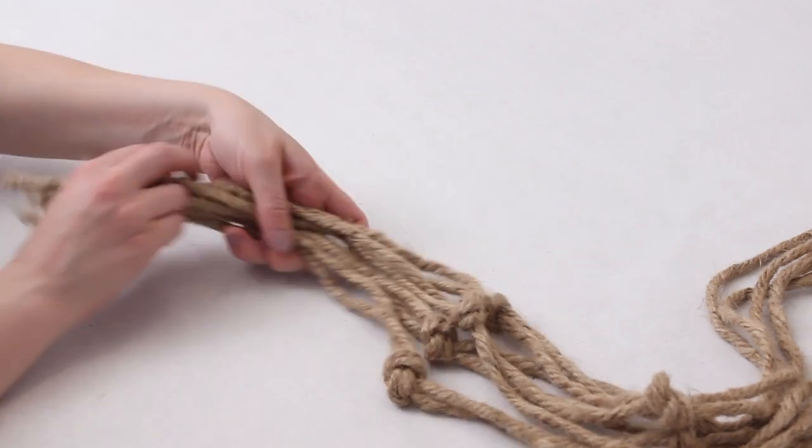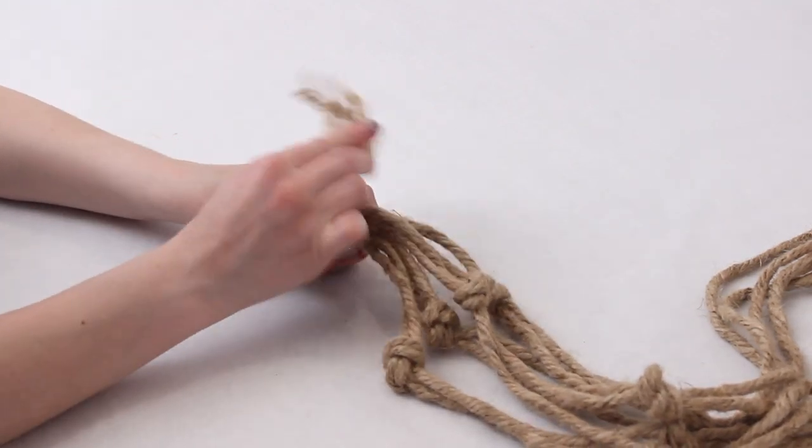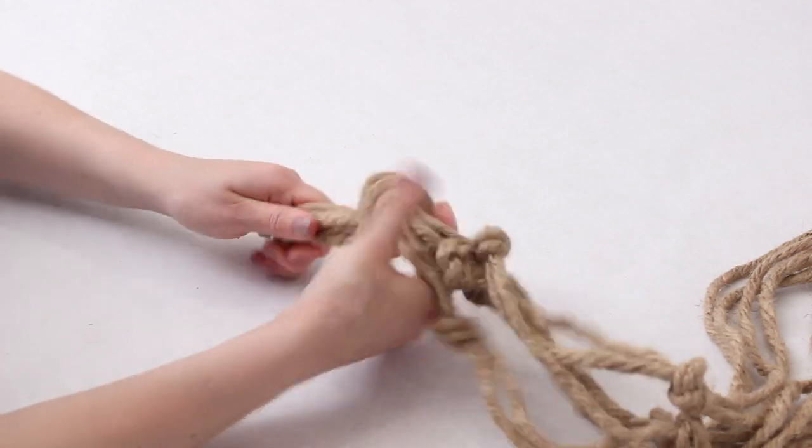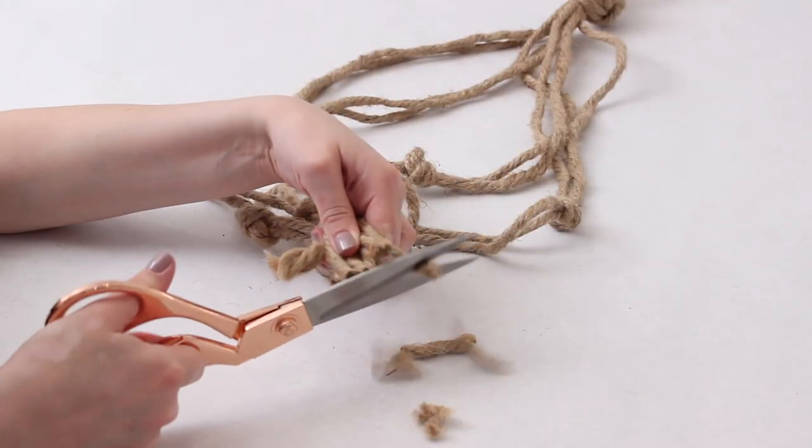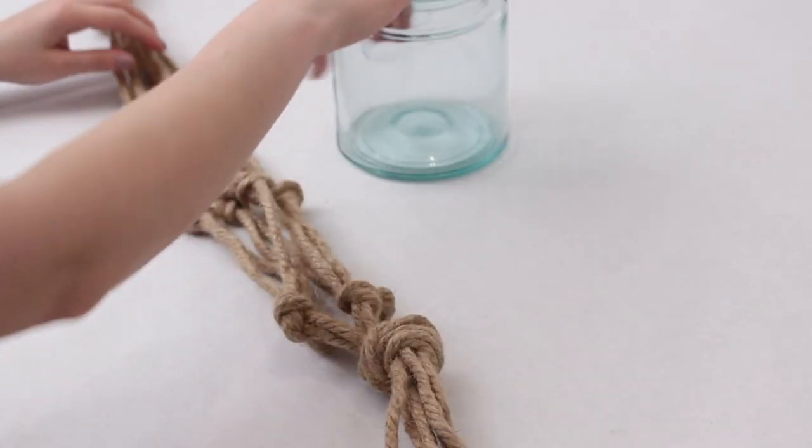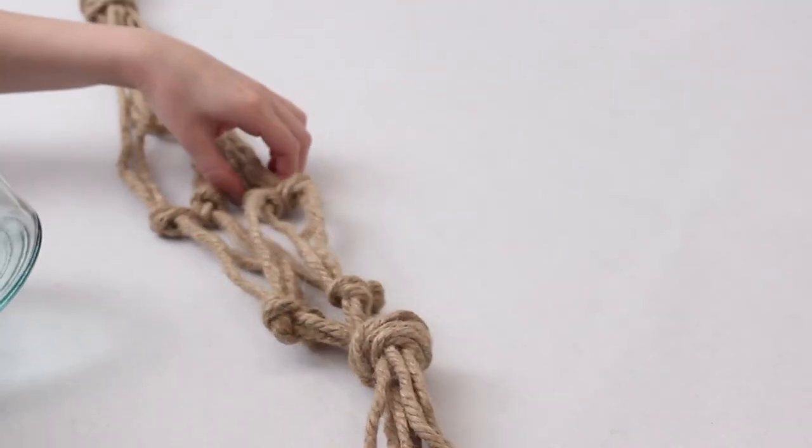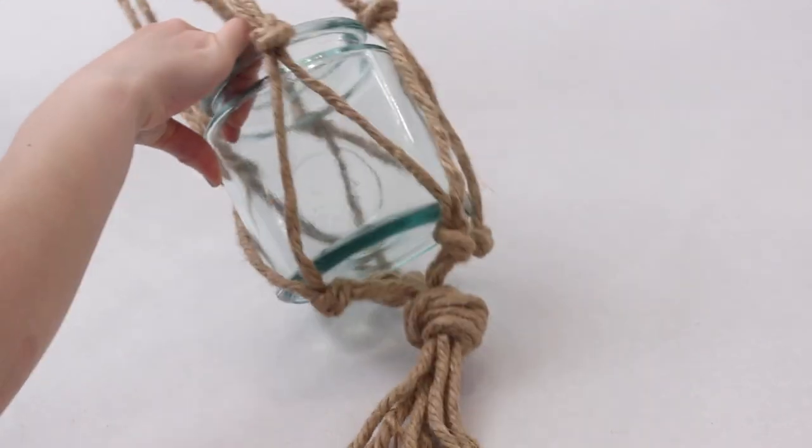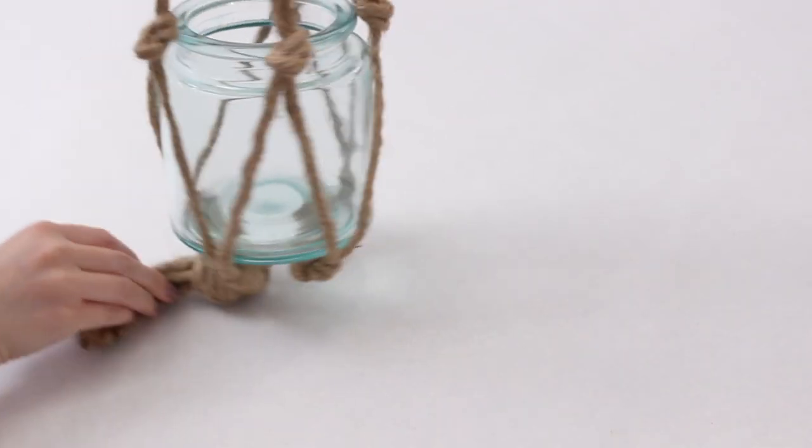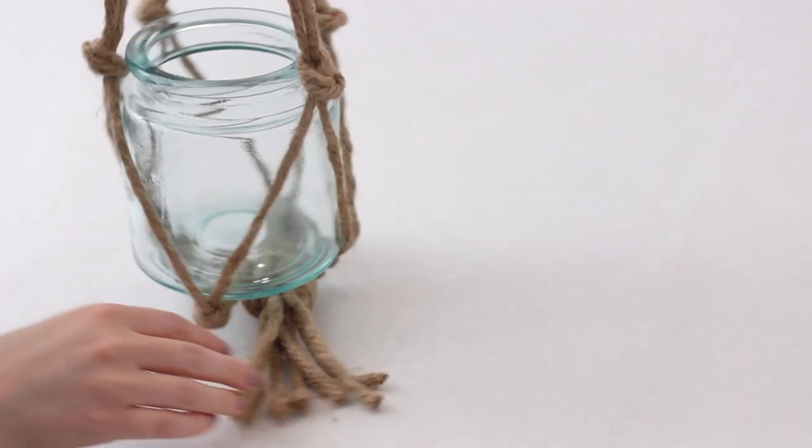The final step is to make a big knot at the bottom. So just take that excess rope and make another big knot and then I just went ahead and trimmed the ends so they were all even. The last step is to take your jar or vase or whatever you're using and put it in between all of those knots you just made and it will rest perfectly on that big knot on the bottom and you can just hang it up. I decided to put fairy lights in mine.